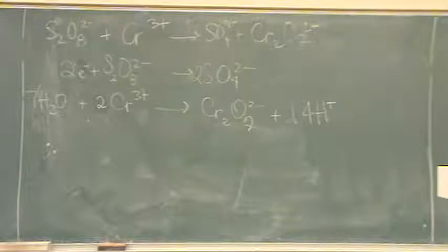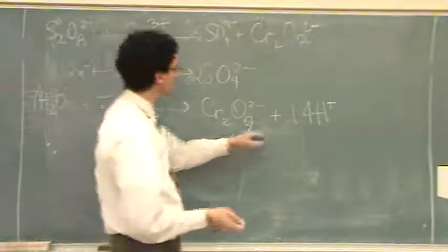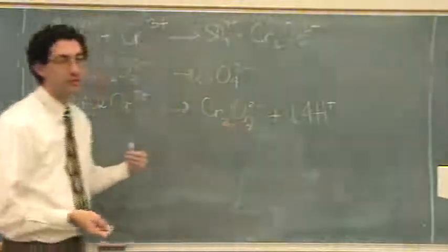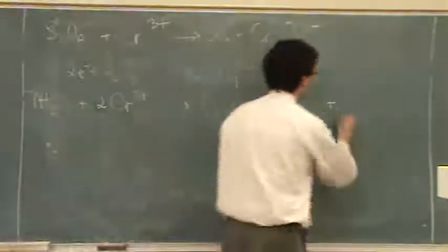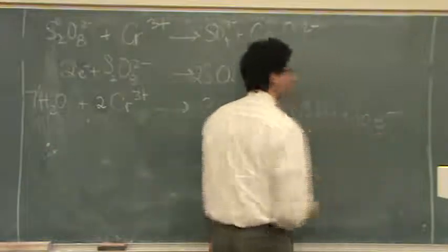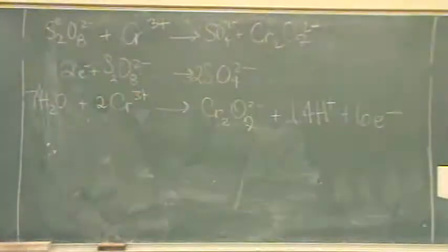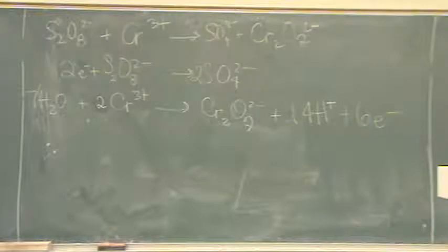On the left side is plus six. On the right side, it's 14 minus two, 12. So six and 12, I better put six electrons. So that means on the left side is plus six. On the right side is 14 minus two is 12, minus six is six. Okay, add it up.